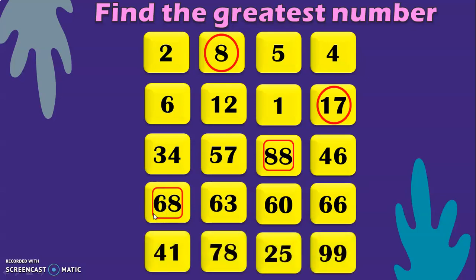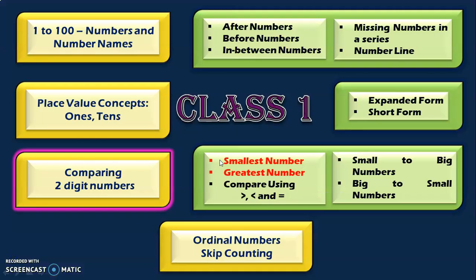Let us do one more sum. We have 41, 78, 25, and 99. First, compare the tens place: 4, 7, 2, and 9. We know that 9 is the greatest, which makes 99 the greatest number among these four. With that, we have completed the two topics — identifying the smallest number and the greatest number — under the learning outcome of comparing two-digit numbers for Class 1.